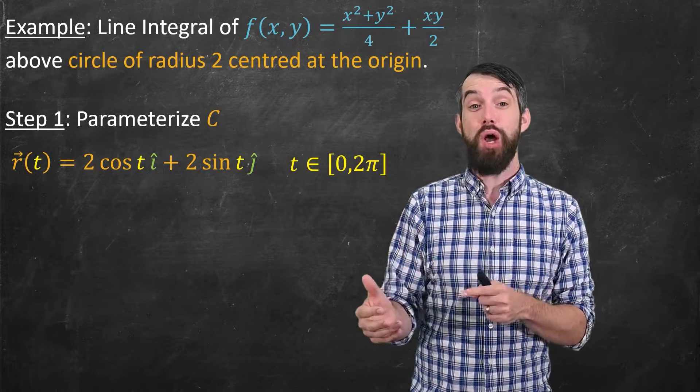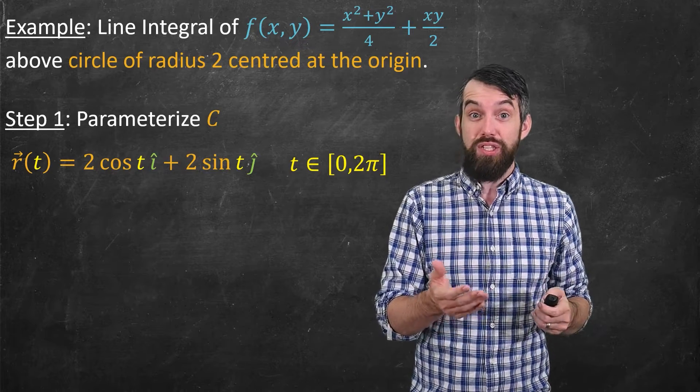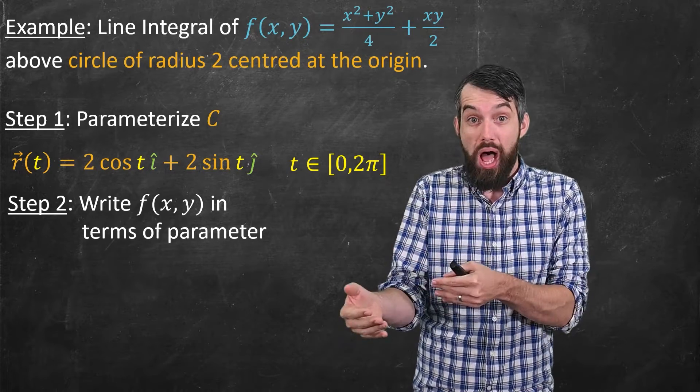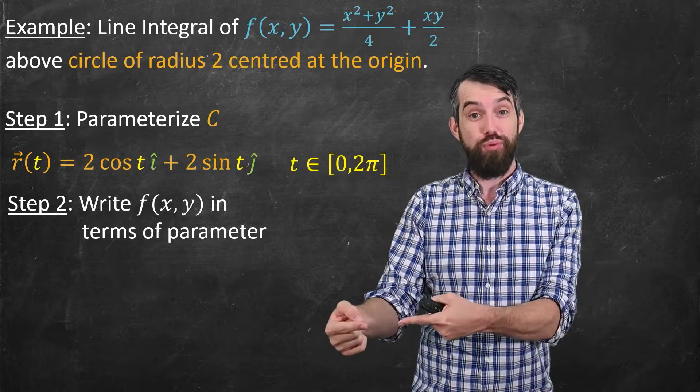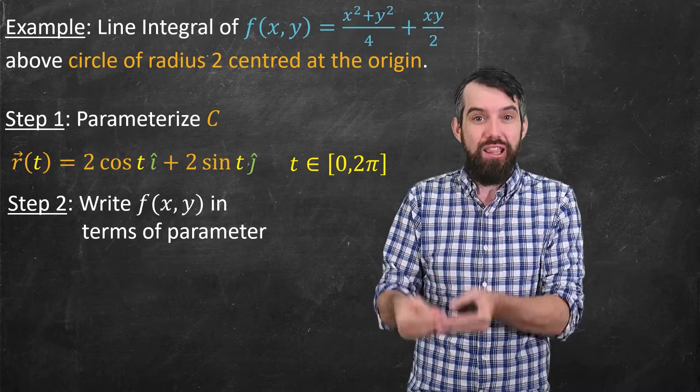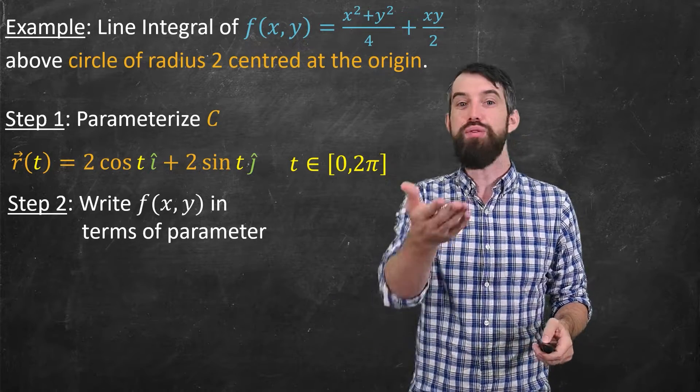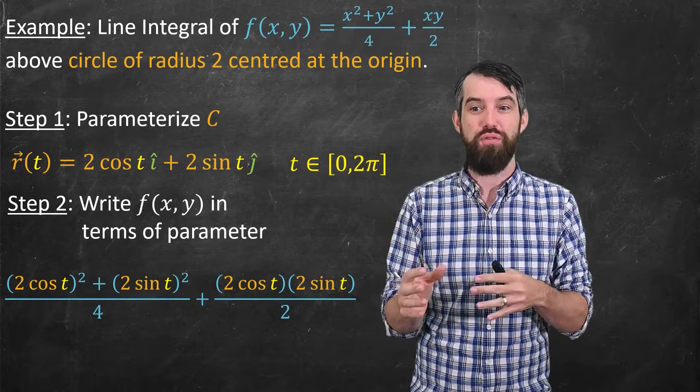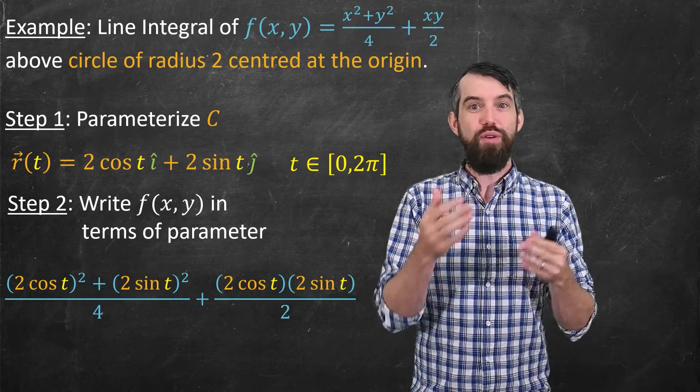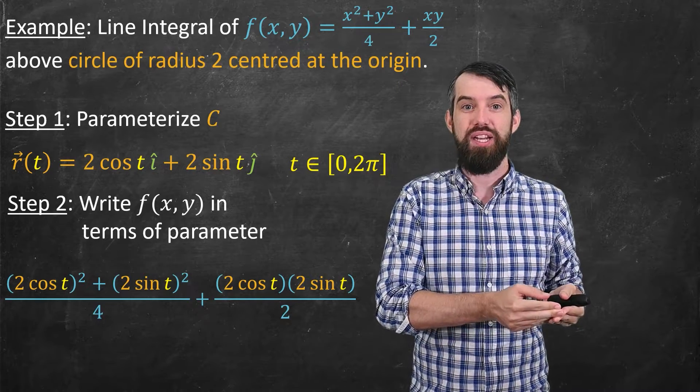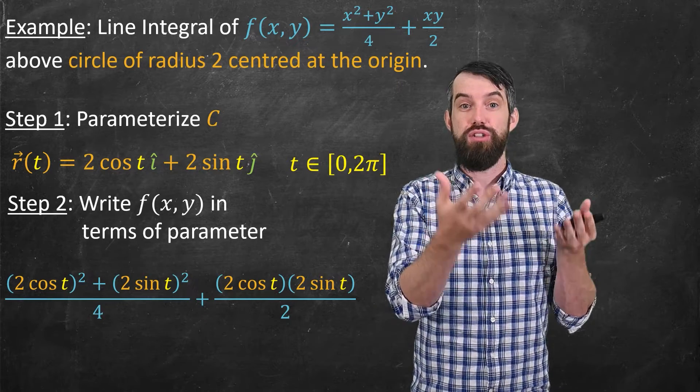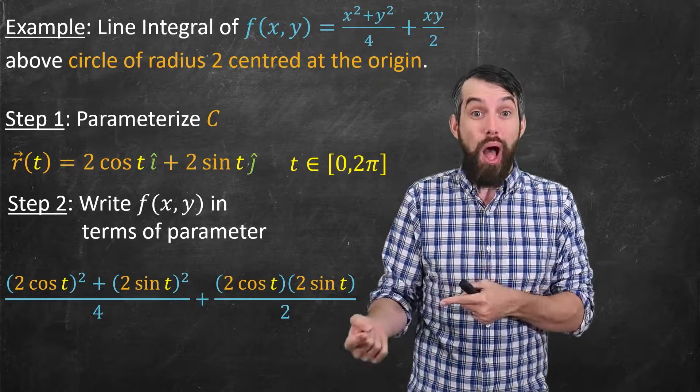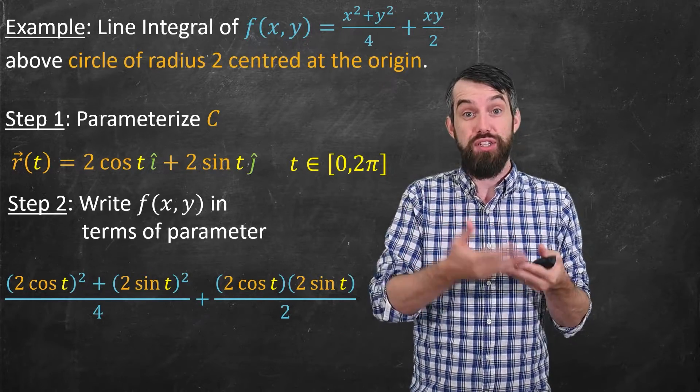Next, I need to talk about the function. So I have that original function f, but I want to write it in terms of my parameter. I want to replace the x and the y with these functions of t. So I'm going to do that. I'm going to take my (x² + y²)/4 + xy/2, the function. And everywhere that there was an x, I replaced it with the g of t, the 2cos t. And everywhere there was a y, I replaced it with the h of t, or the 2sin t.